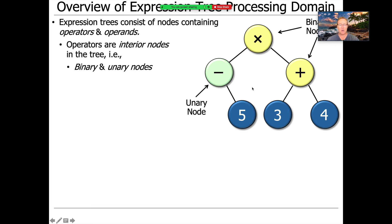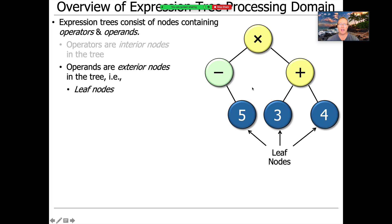And the unary nodes would be things like unary negation. And then we've also got operands, which are exterior nodes in the tree. And these are things that we often call leaf nodes. And so leaf nodes in our world correspond to actual values.